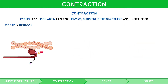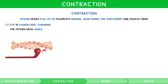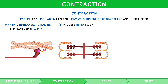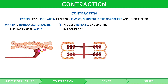ATP is hydrolyzed to ADP and phosphate, energising a change in angle of the myosin heads away from the centre of the sarcomere. The myosin heads are now considered cocked, and a store of potential energy. Myosin heads once again bind to myosin binding sites, this time further from the centre of the sarcomere. This process repeats, causing the sarcomere to shorten.